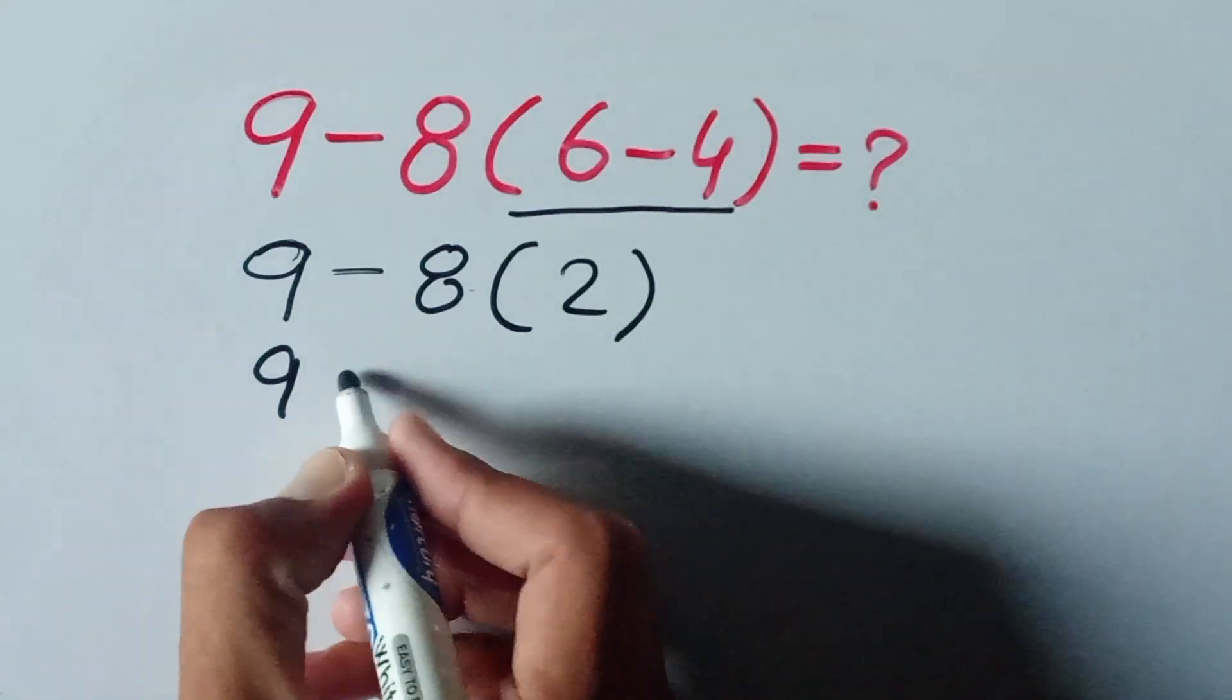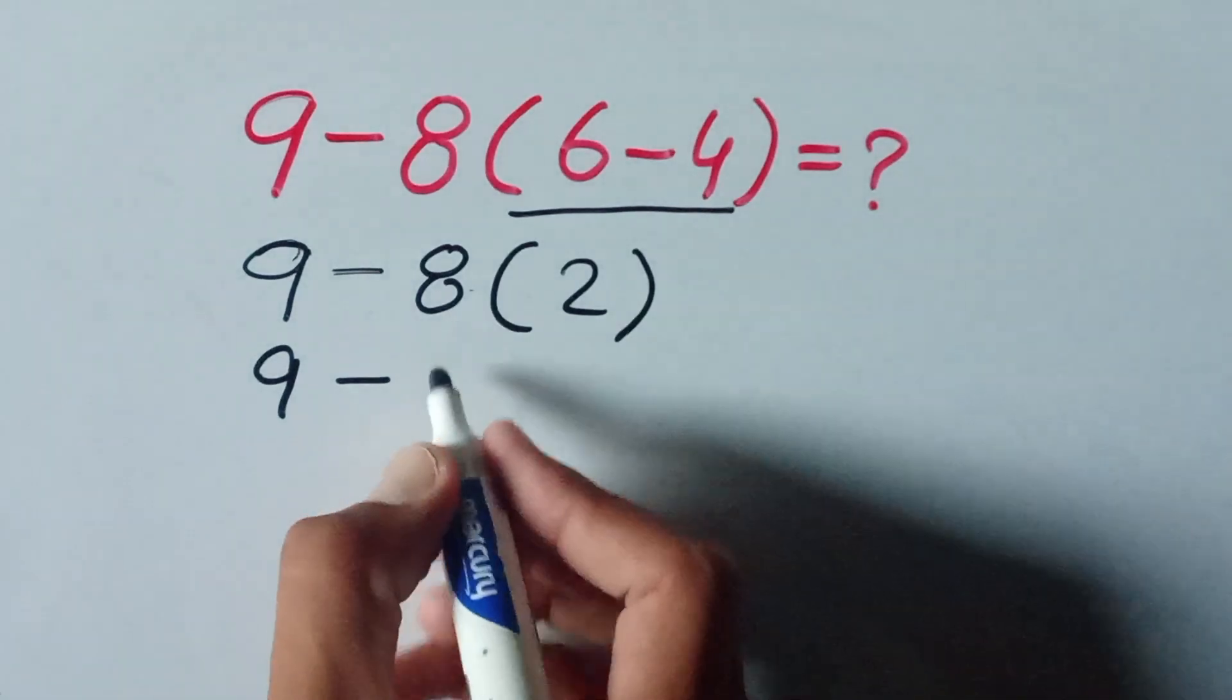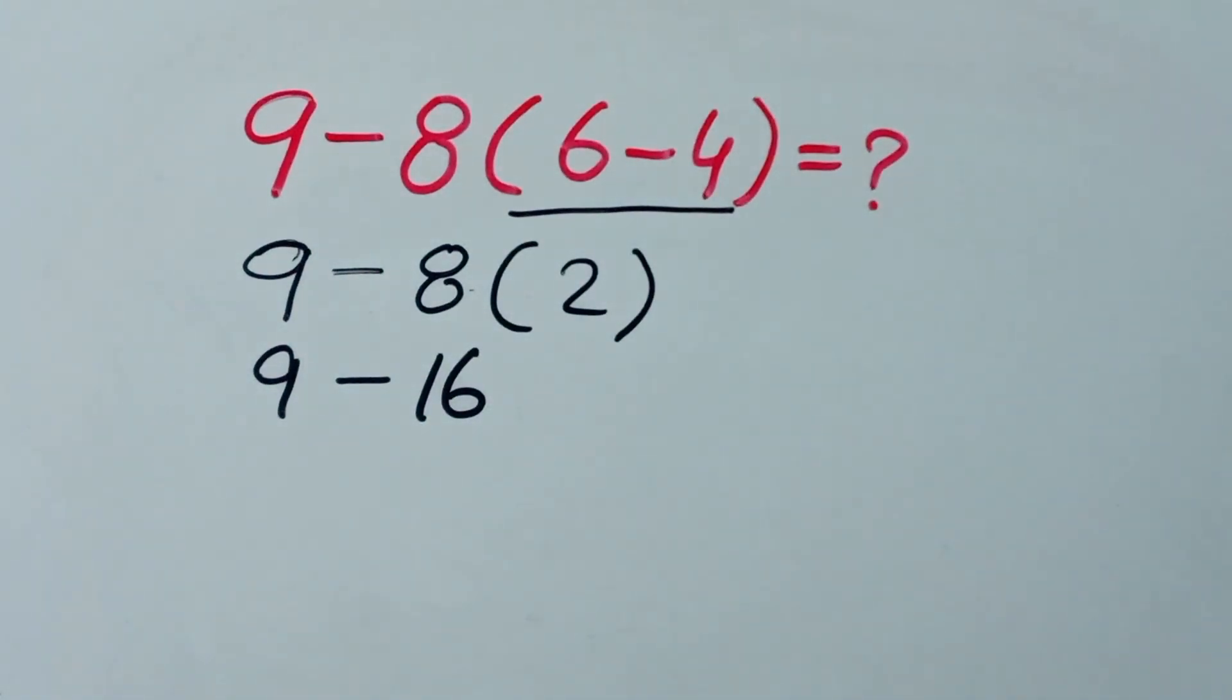So 9 minus 8 times 2 equals 16. 9 minus 16 equals minus 7.